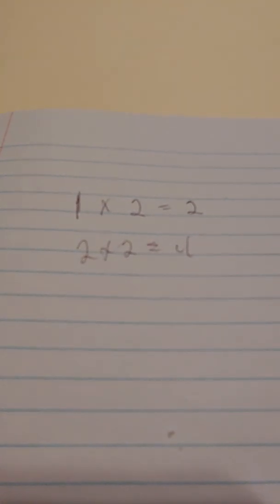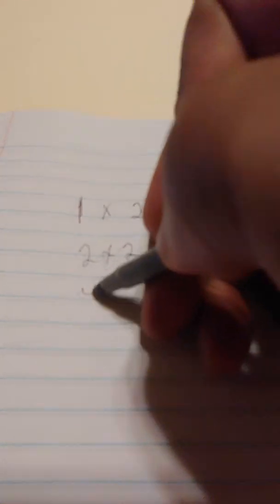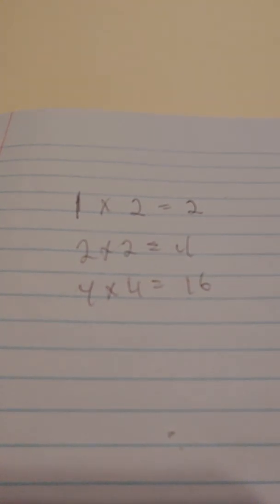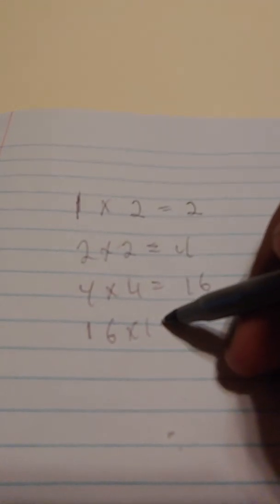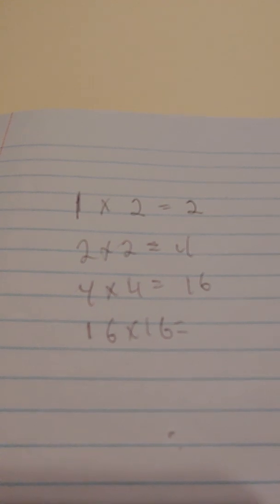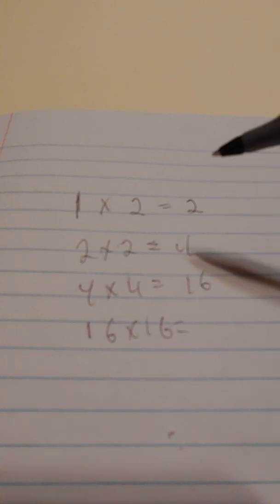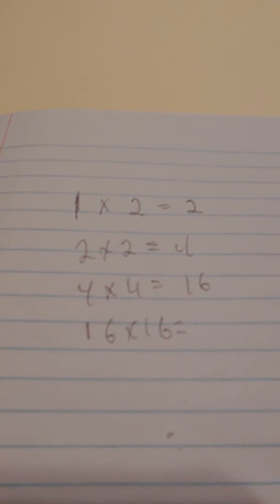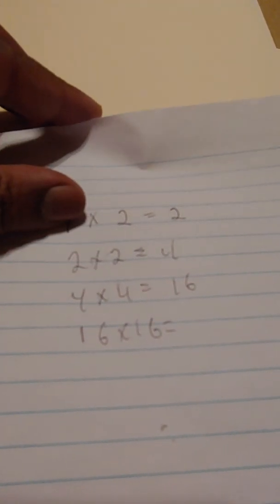But then when we ask ourselves, what is 2 times 2? We say, okay, well then that's 4. And that does make a lot of sense. And then we say to ourselves, what is 4 times 4? And then we say 16. It might not be as simple, but it is simple. But then what is 16 times 16? There's where the problems start to arise. People start to look for different principles to solve problems that they learned in the beginning.